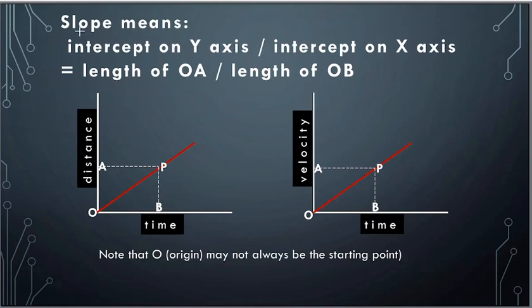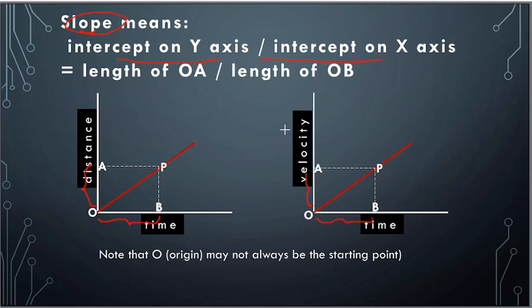We need to know what is the meaning of slope. Slope means intercept on y-axis divided by intercept on x-axis. In the figure, intercept on y-axis is OA and intercept on x-axis is OB. It is always vertical upon horizontal — vertical always in the numerator, horizontal always in the denominator. This means time will always be in the denominator, and either distance or velocity in the numerator.